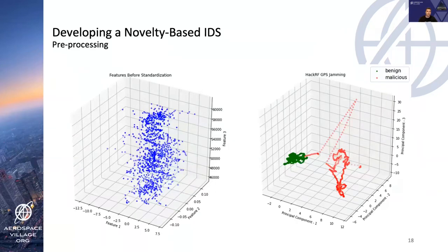Principal component analysis is applied to avoid manual feature selection and reduce the number of features, inherently making the process more efficient. A defined variance percentage is given depending on the attack — in some cases this reduced features from as many as 83 down to as few as 13. Before standardization, feature scales vary enormously, for example one ranging from 46,000 to 60,000 and another from 0 to 0.05. After standardization, scales are relatively equal, making PCA variations more accurate. Graphing three principal components with benign and malicious labels clearly shows when an attack occurs.